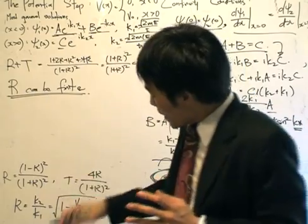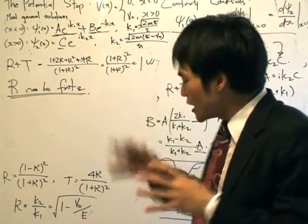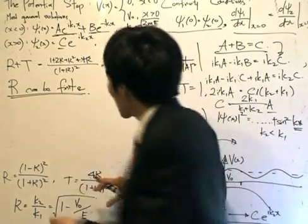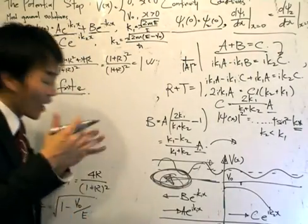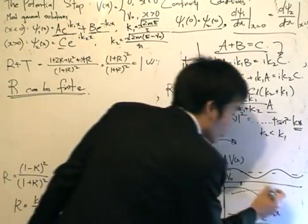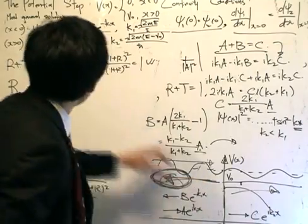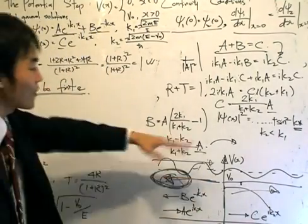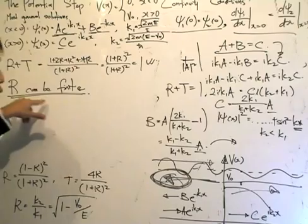So particle energy is greater than V-naught, pick a certain energy value, put it inside here, R can be finite, and this is what happens. Now obviously when that happens, some of the particles also get transmitted. It corresponds to the first one, there's a conservation, but this is what is the important part right now.